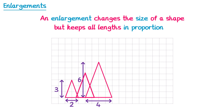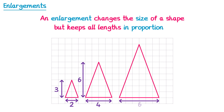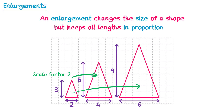Or we could triple all of the lengths. For this triangle here the base is now 2 multiplied by 3 which is 6, and the height is 3 multiplied by 3 which is 9. So this is also an enlargement. To go from the smallest triangle to the middle triangle we would say this has a scale factor of 2, because all of the lengths have been multiplied by 2. To go from the small triangle to the largest triangle we would say this is scale factor 3, since all of the lengths have been multiplied by 3.